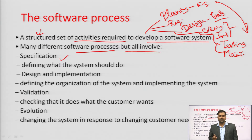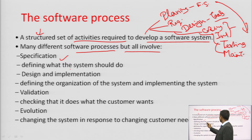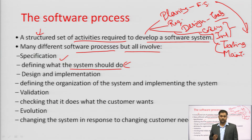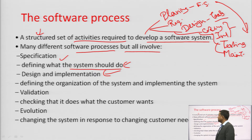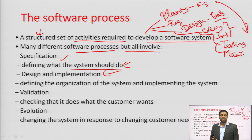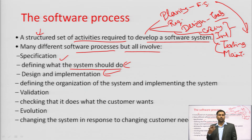After specification comes design — defining what the system should do. We create a design document: SDD (Software Design Document), UML diagrams, BRS, SRS, or FRS. After that we go for coding.